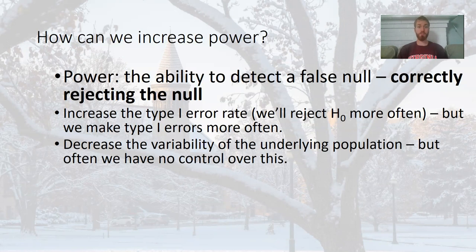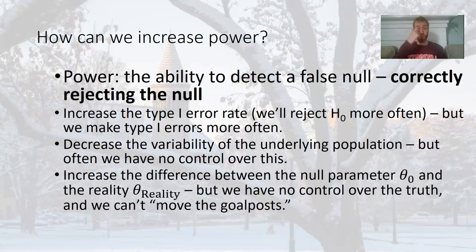One other way to increase the power is to decrease the variability of the underlying population. But if we could do that, we would. We might not have any control over the population. If we could decrease the variability in the length of time somebody has an illness, we would probably do that. You also can increase the difference between the null parameter and the reality, but we can't change reality. The null parameter is often governed by the research goals we have. So we can't change either one of these things in practice.